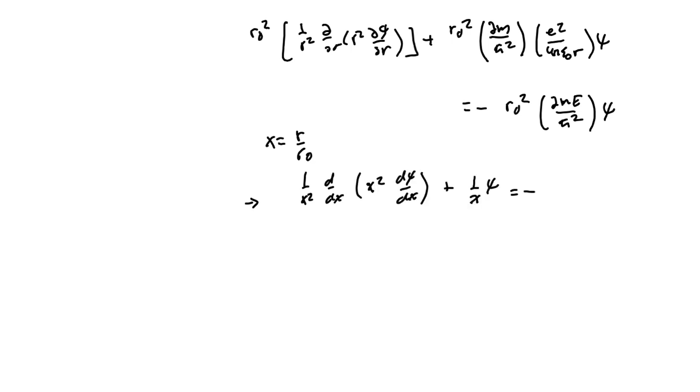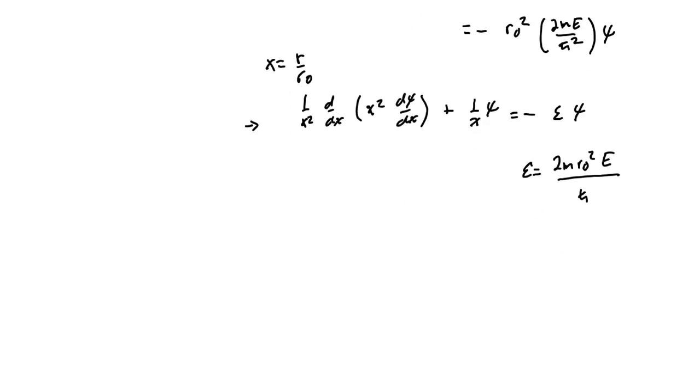That's 2 over X, not 1. Then script E is some dimensionless kind of energy eigenvalue. But we can write it in terms of the actual energy E.